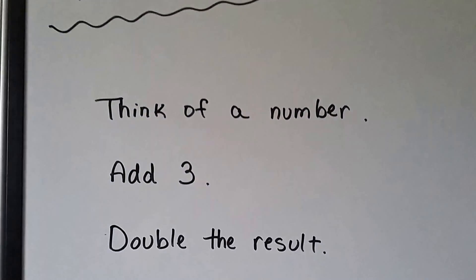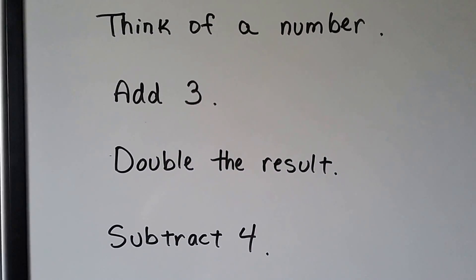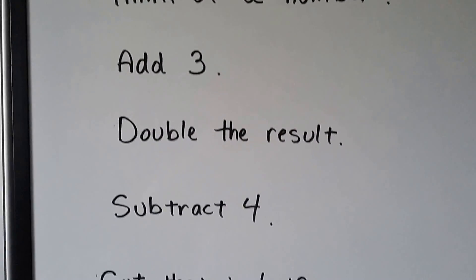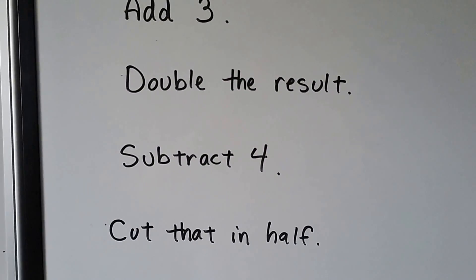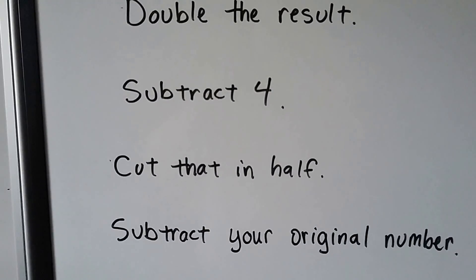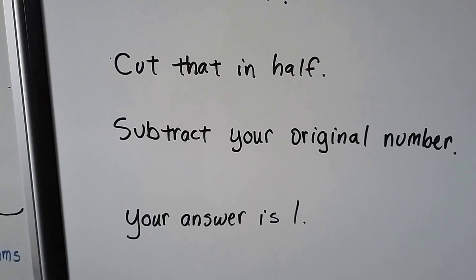So if you think of a number and then add three, you double that result and then subtract four, cut that in half, subtract your original number and your answer is one. How did I do that?